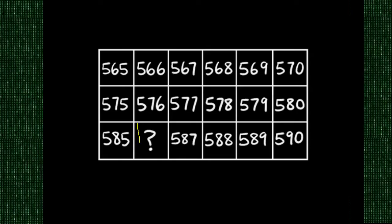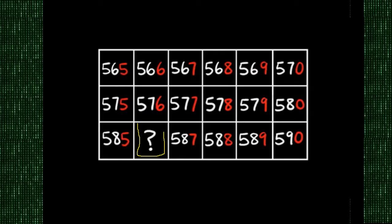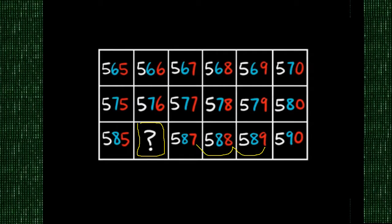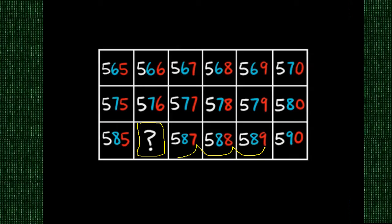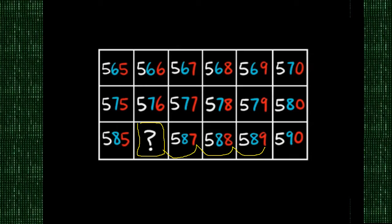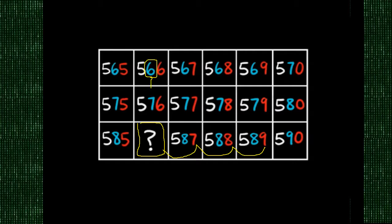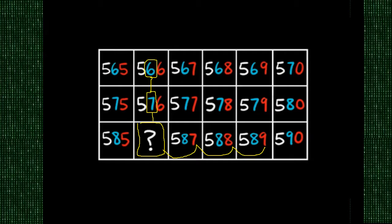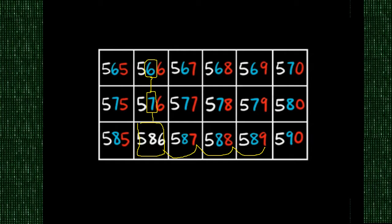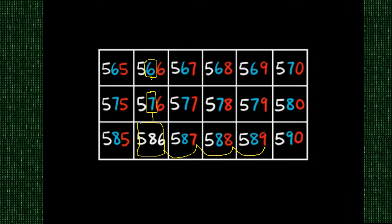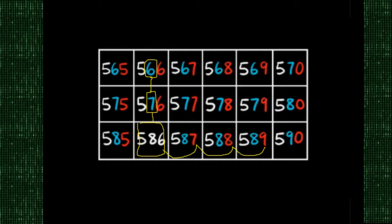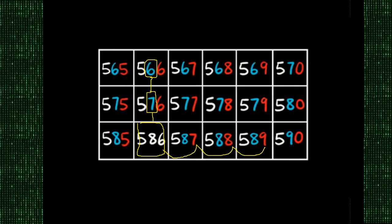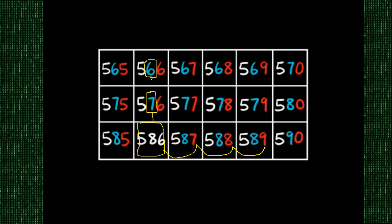Like this missing number right here. You can use the ones place: nine, eight, seven—what would be next? And you could use the tens place: six, seven—what would come after seven? And we get the number 586. So learning how ones and tens work is really important to helping you get comfortable with mental math and skip counting by big numbers.